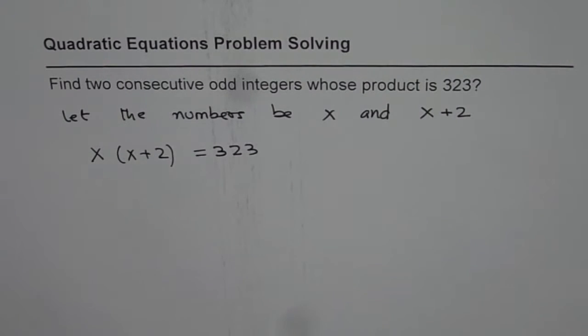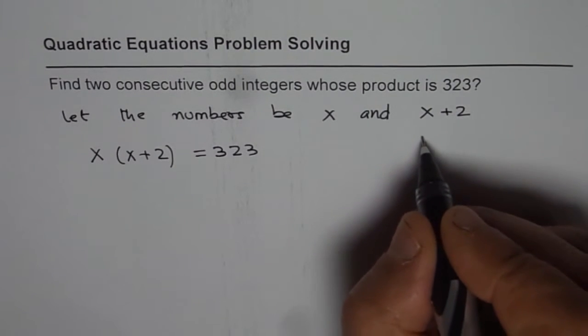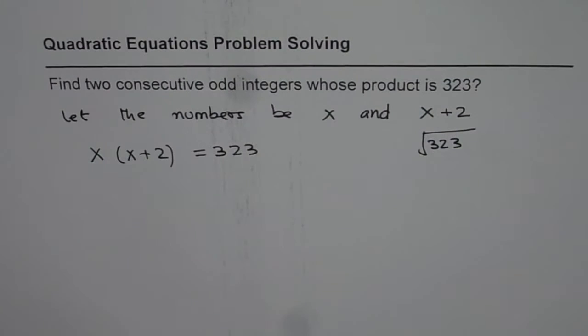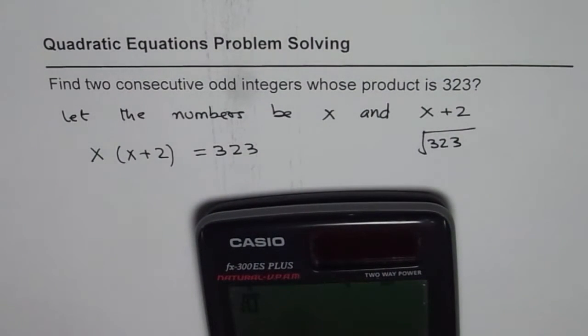Now, first way of getting the answer is, you can square root 323 and get approximate answer. This is not the recommended method. What you do is, find square root of 323. So what we do is, we just do square root of 323.